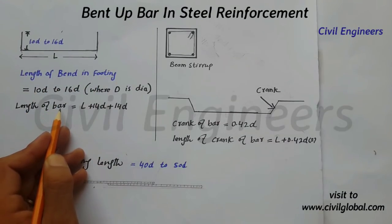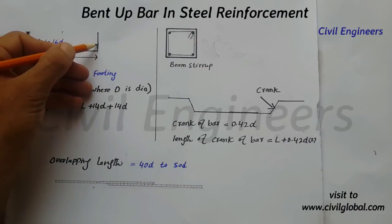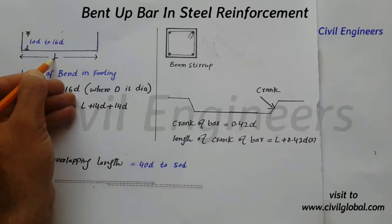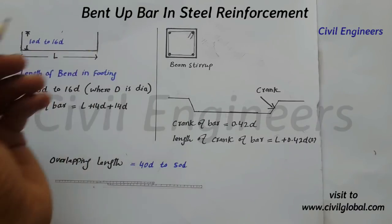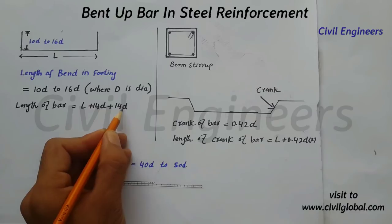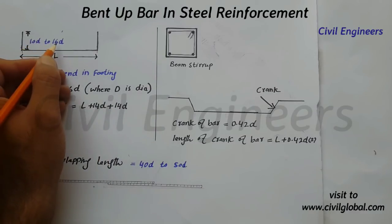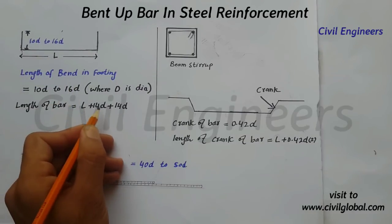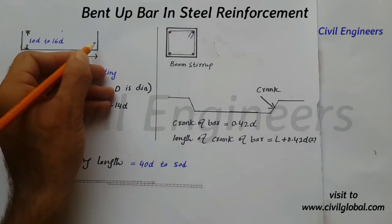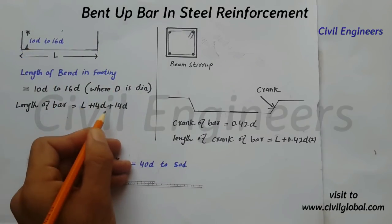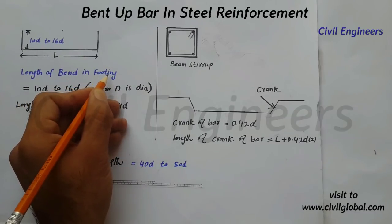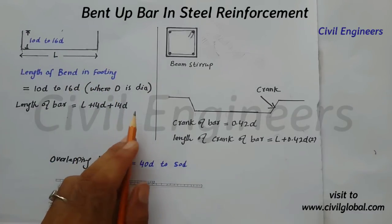The length of bar — or length of steel with bend of bar — is equal to L, where L is the actual length of the steel without the bend, plus 14D plus 14D. The range is 10D to 16D, and I will take 14D here. So: L plus 14D for the first bend, plus 14D for the second bend. This is the formula to find out the length of bend in column footing.